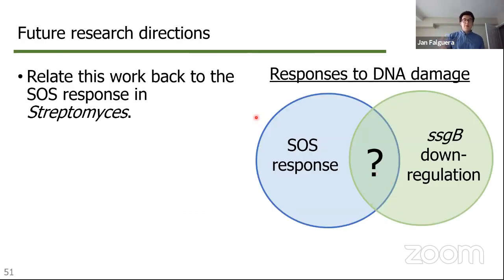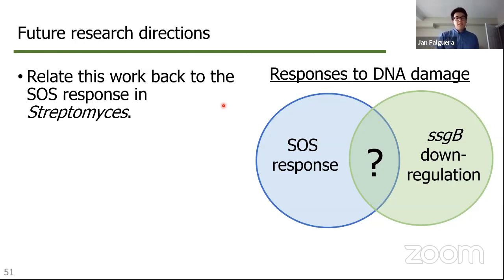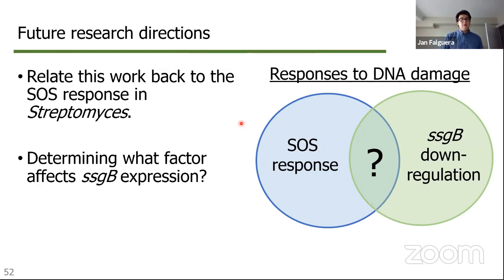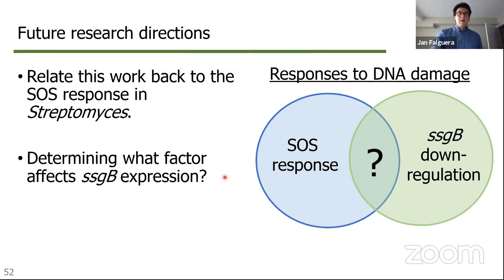With regards to future directions, the most important point is that the most well-described DNA damage response in bacteria — the SOS response — is something I haven't directly addressed. It will be really important to understand how the SSGB effect of DNA damage has an interplay with what's known about SOS responses in other bacteria, and additionally how an SOS response even works in a developmental microorganism like Streptomyces. On a similar note, it would be really interesting to figure out what factor is actually affecting SSGB expression — there are at least three developmental factors that could affect it during normal Streptomyces development, and it could also be something we don't yet know exists.